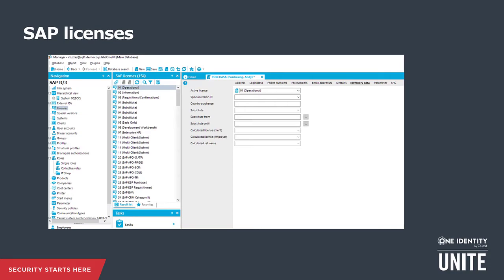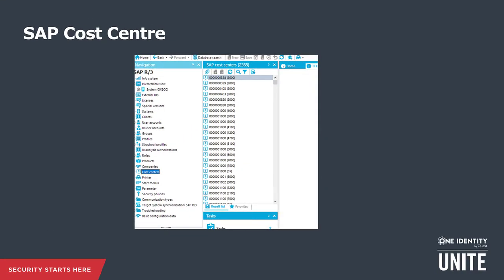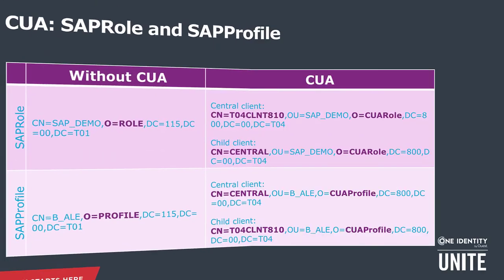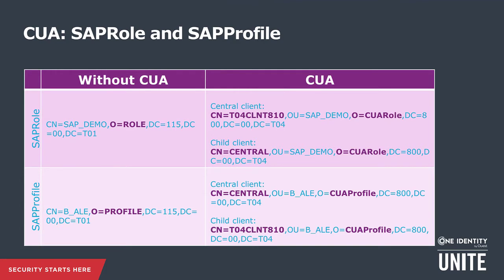System measurement data is supplied in One Identity Manager, while the actual measurement takes place in the target system. One Identity Manager also provides cost center information from an ERP system that can be used to reflect cost center structures in the identity manager. In a system without CEA, roles and profiles are directly mapped from the client and have a single representation. In a system with CEA, the roles and profiles have representation in both the CEA central client and the CEA child system.